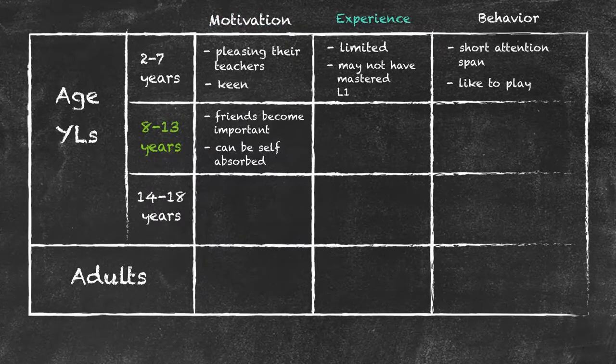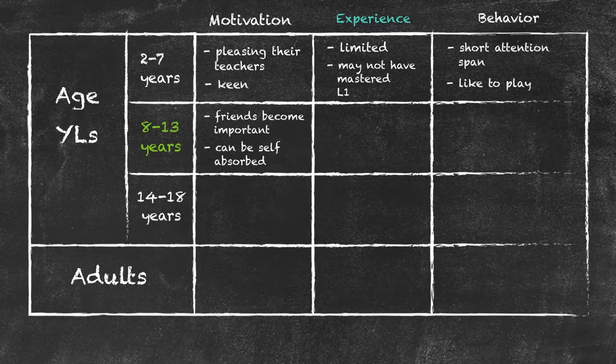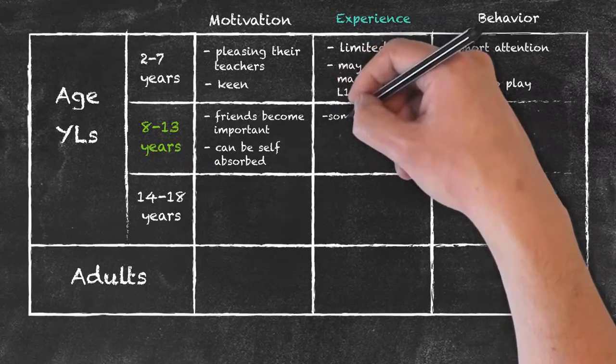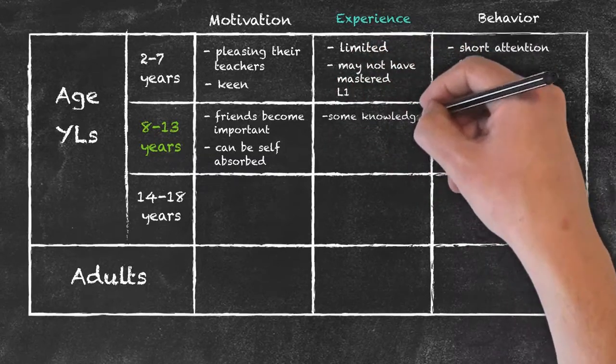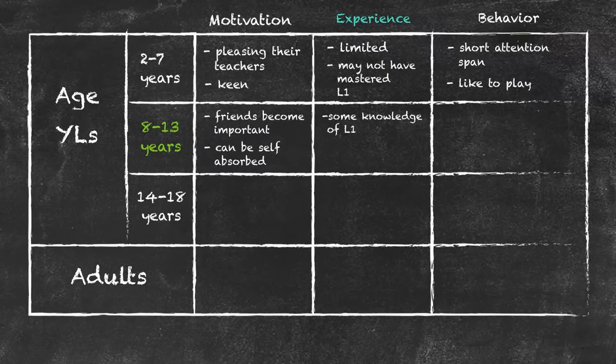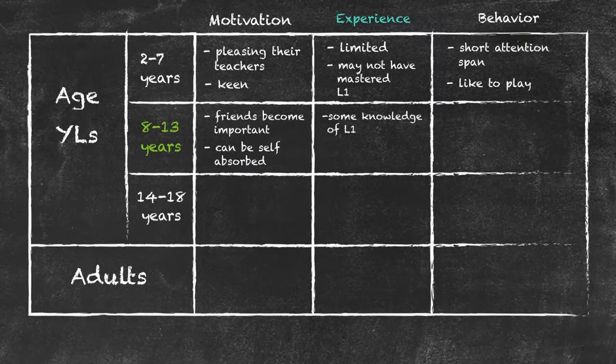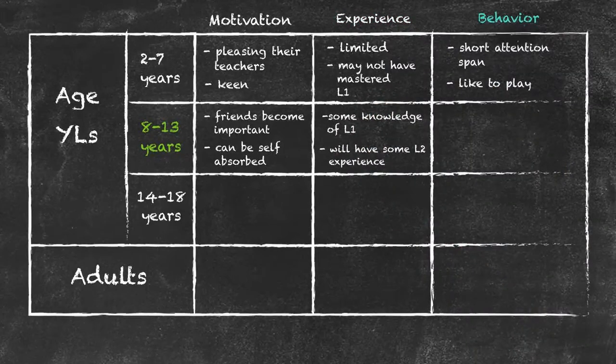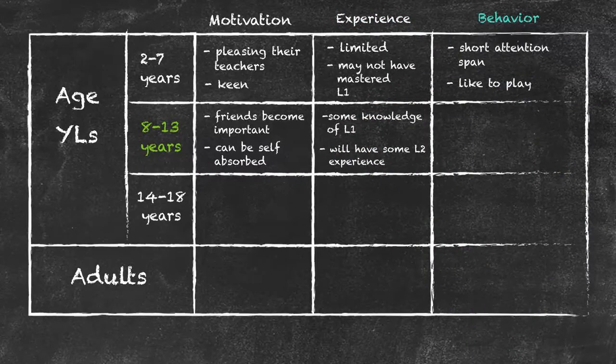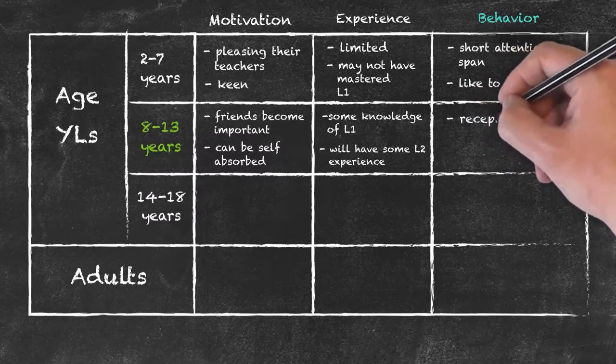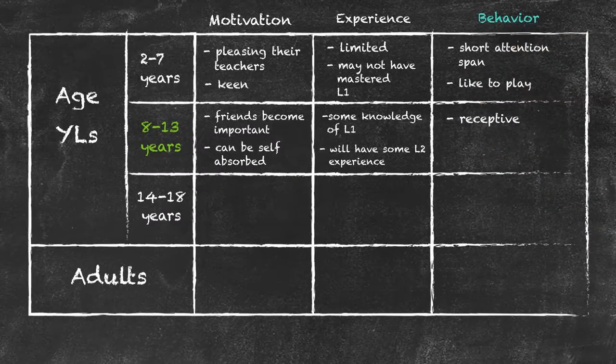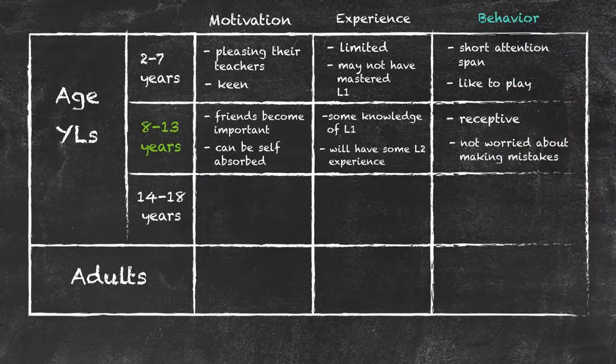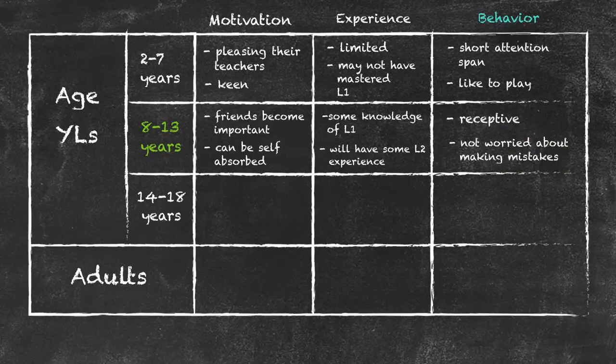Moving on to their experiences that they've had. Obviously they will have gained some knowledge by the age of 13 of their own native language. In fact, they'll be pretty along the way to everything they're ever going to know about it. Quite possibly they will have some second language knowledge through their teaching. What sort of behaviours do they have? Well between the ages of 8 to 13, in general they tend to be receptive to their teaching. They tend to be a little less worried about making mistakes in their language learning at this age.